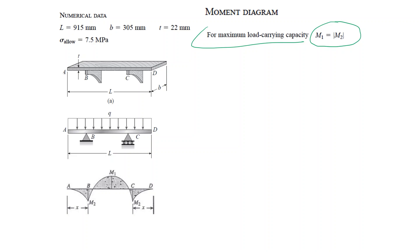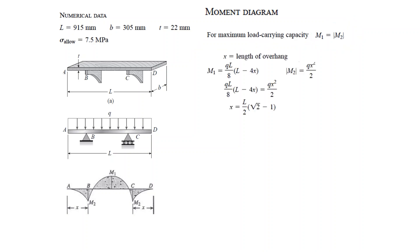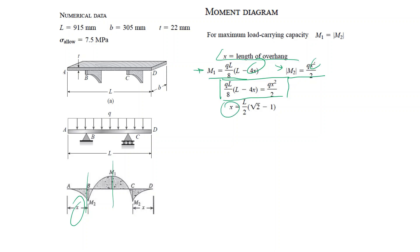The solution for maximum load capacity is to let M1 equal M2 in absolute value, since they have different signs. We cut at both locations, calculate M1 and M2 as a function of x, set M1 equal to M2, and determine the value of x where they are equal.